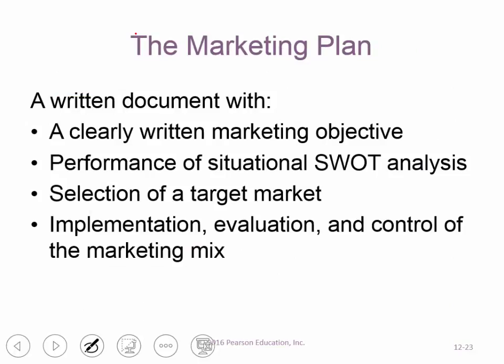The marketing plan is a written document. It identifies the clear marketing objective, includes a SWOT analysis — strengths, weaknesses, opportunities, and threats — and involves the selection of a target market based on age, demographic, and so on. Then it covers implementation, evaluation, and control of the marketing mix. Once you implement your strategy, you evaluate and control your four P's — promotion, product, price — on an ongoing basis. It's not a one-time thing.